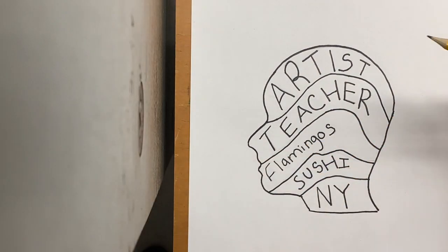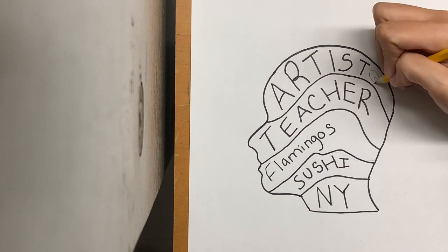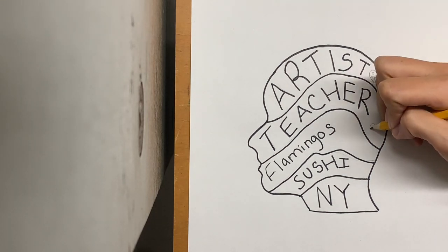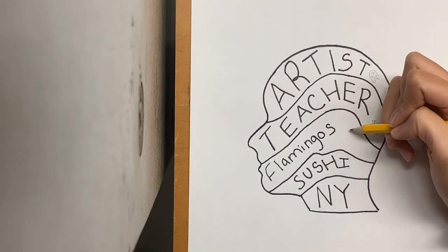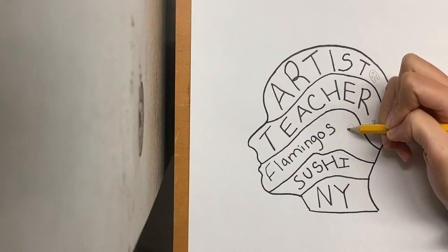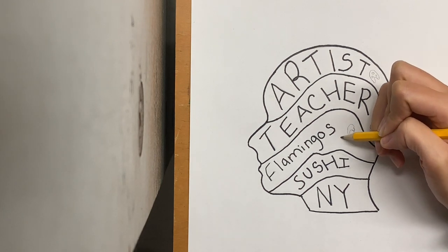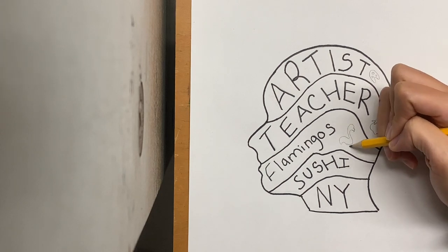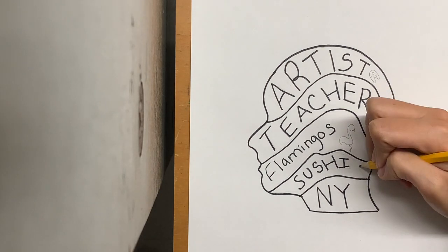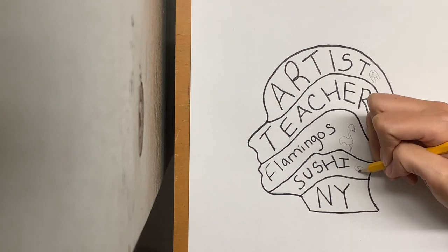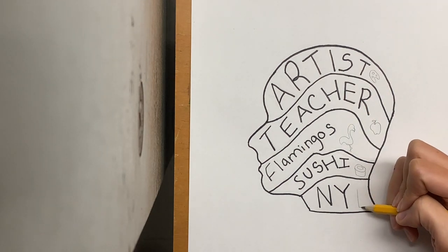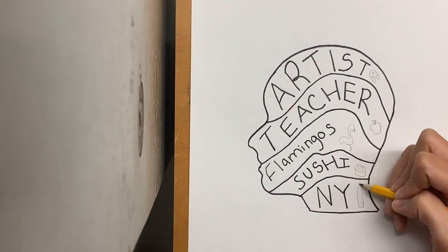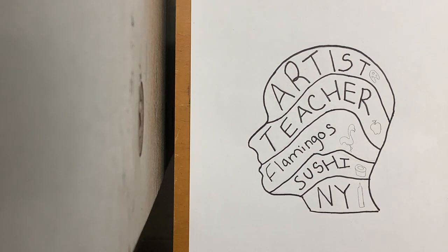Now I'm going to use a pencil and sketch a small picture that goes along with each word. For 'artist' I did a small paint palette, for 'teacher' I did an apple, for 'flamingos' I did a flamingo of course, for 'sushi' I'm drawing a small sushi roll, and for NY I'm drawing a little building. It's important we use pencil because if we make a mistake we can erase.